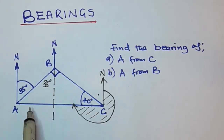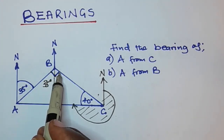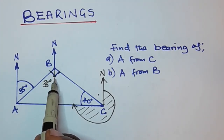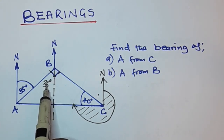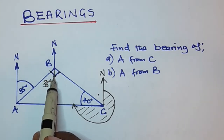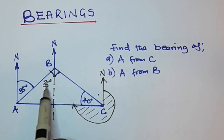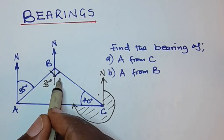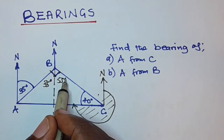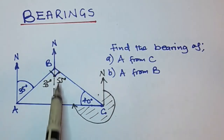Now, this is a 90-degree angle. Out of 90 degrees we already have 35 degrees. So to find this angle here, we say 90 minus 35, which gives 55 degrees. So this angle here is 55 degrees.